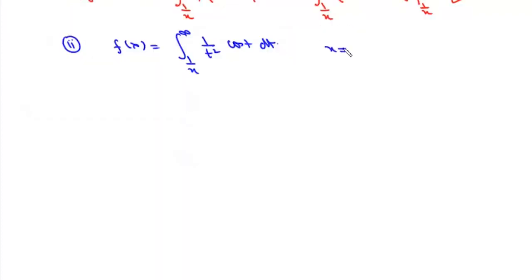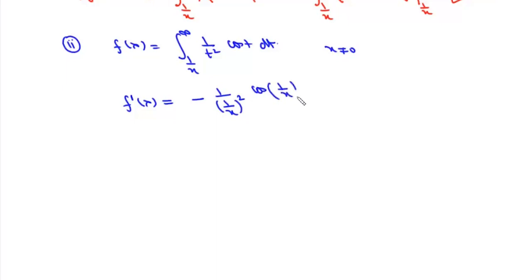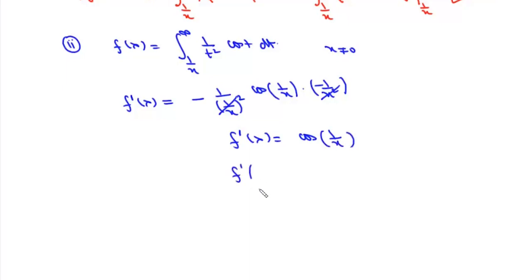Since x ≠ 0 we can use the Newton-Leibniz (Leibniz differentiation) formula. So f'(x) = −(1/(1/x)²) · cos(1/x) · (−1/x²). The two minus signs cancel and the x² terms cancel, giving f'(x) = cos(1/x). Therefore f'(1/π) = cos(π) = −1.